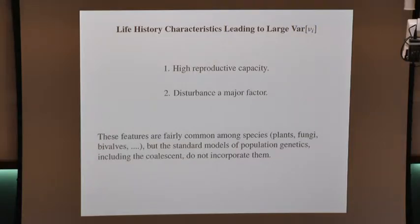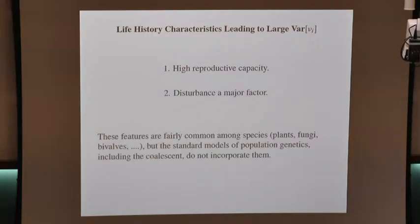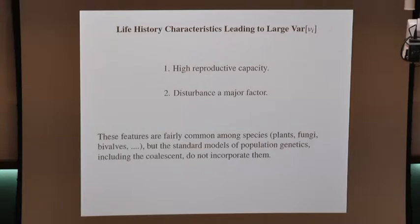I want to talk about some organisms that are really different from us — ones in particular that have very high reproductive capacity. An important factor will also be the role of disturbance in creating opportunities for an individual to have a very large number of offspring. These features are common to organisms that produce lots and lots of gametes. I'll give an example from marine bivalves — mussels on the west coast of North America.